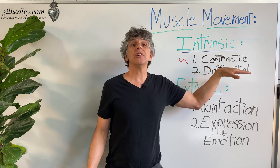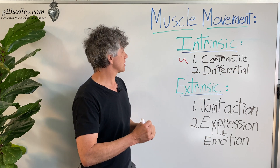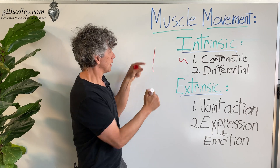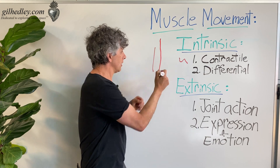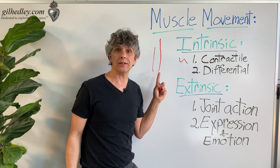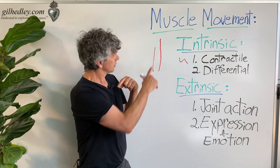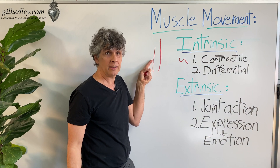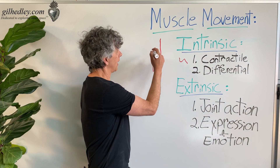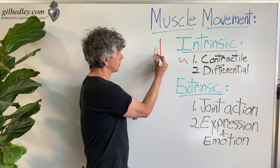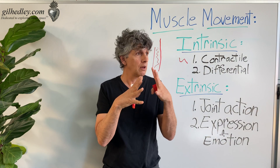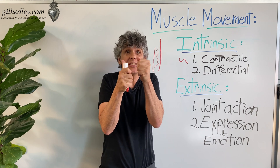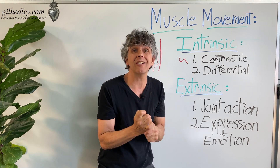What makes contraction a meaningful property is differential movement. One muscle fiber can shorten right next to its neighbor that is still lengthened — one is on and the other is off. The relationship between the two has to be distensible; they have to shear relative to each other.